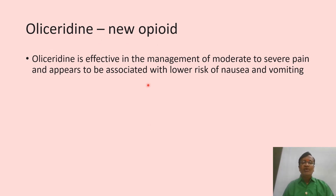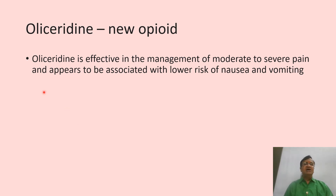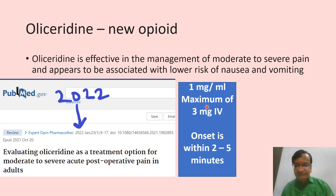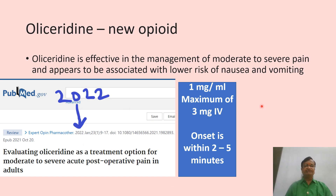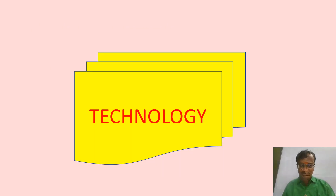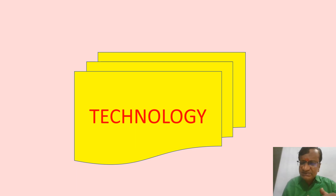Oliceridine is a new opioid effective for moderate to severe pain and appears to be associated with a lower risk of nausea and vomiting. For acute post-operative pain in adults (2022 data), dosing is 1 mg/mL with a maximum of 3 mg IV, with onset within two to five minutes.